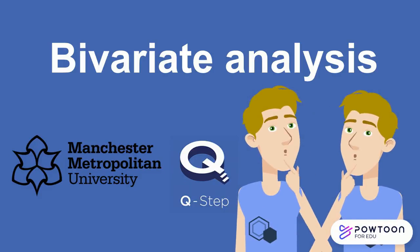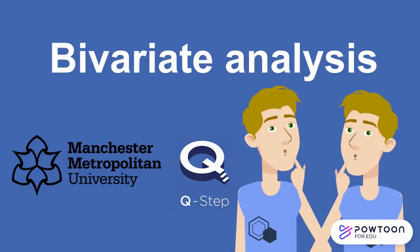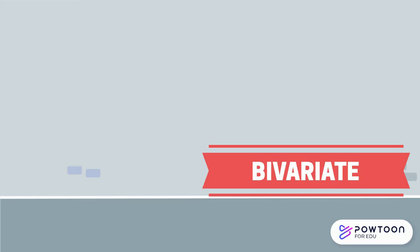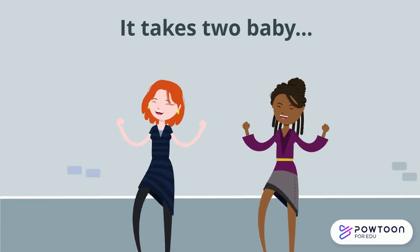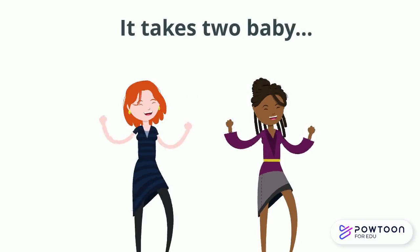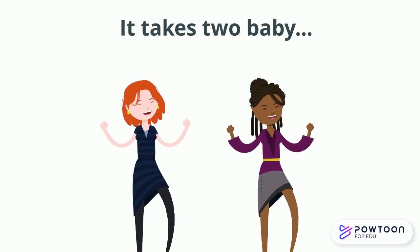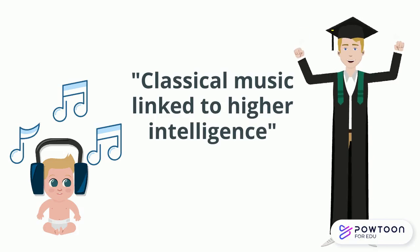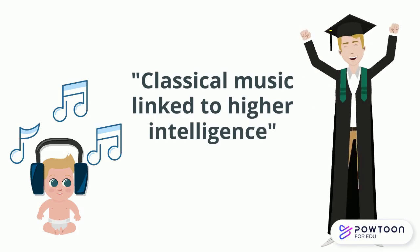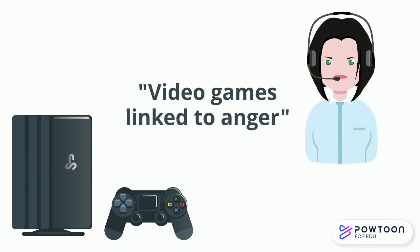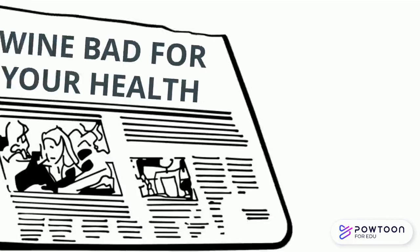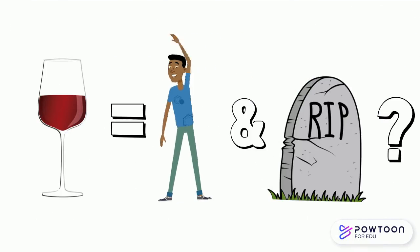Hello and welcome to another of our MMU QSTEP video tutorials. Today's video is going to focus on bivariate analysis. Bivariate analysis refers to the analysis of two variables to examine the relationship between them. Humans are obsessed with exploring the relationship between two things — you'll have seen newspaper headlines citing relationships between two variables all the time, whether they're good, bad, or sometimes even both. So bivariate analysis is really useful to learn.